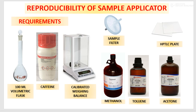Let us discuss parameters one by one. First is reproducibility of sample applicator. For that, you require a 100 ml volumetric flask, caffeine standard, calibrated weighing balance, and methanol. Methanol will be used as a solvent for preparation of caffeine sample. Then sample filter, and you require HPTLC plate, toluene and acetone. These two solvents are used as a mobile phase for development of the HPTLC plate.